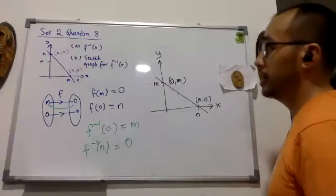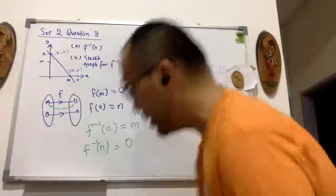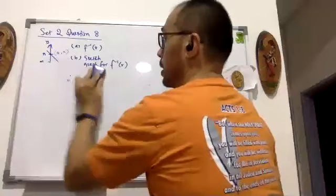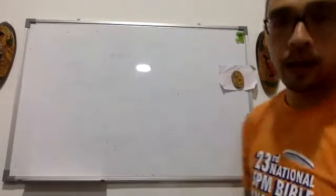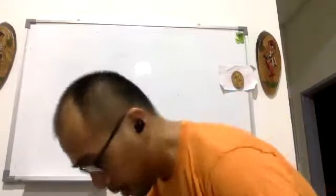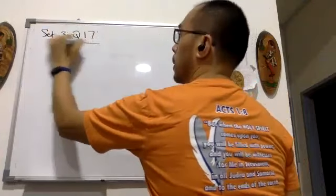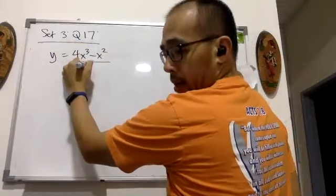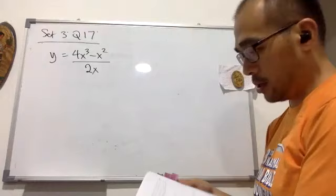The next question given is from the same book — Set 3, Question 17. The function given is y equals (4x cubed minus x squared) over 2x. The equation may not be clear in your book, so you may want to rewrite it to make it clearer.